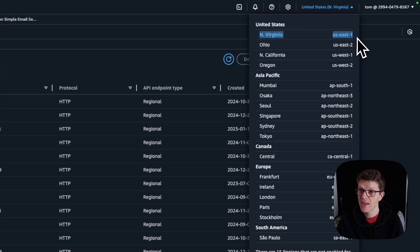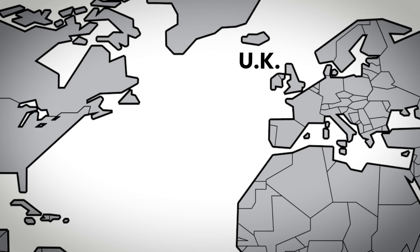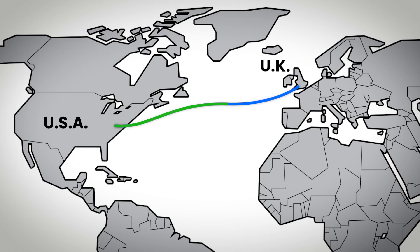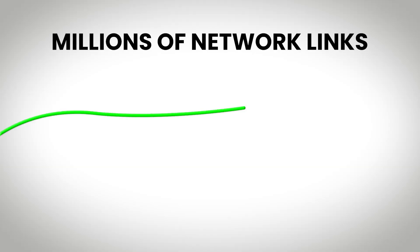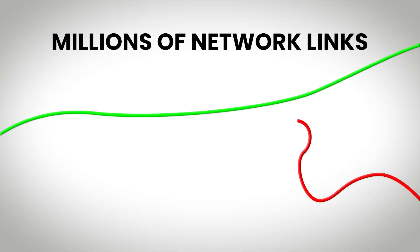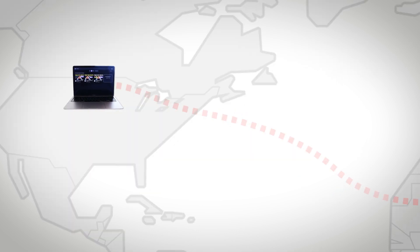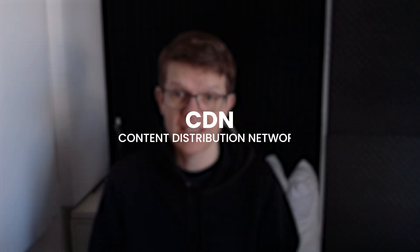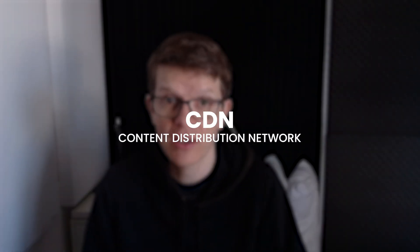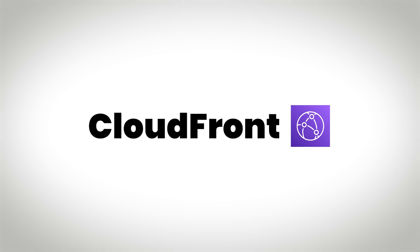My API is hosted in the US, so if someone from the UK sends a request, it has to travel across the Atlantic and back, which adds latency. To fix that, our next AWS service helps your web app load fast no matter where your users are. The problem with accessing a web app across the internet is that your request can travel through any of millions of network links — some fast, some painfully slow. For the best experience, your app should be served from a server physically close to the user. That's exactly what a CDN, Content Distribution Network, is for. AWS offers a CDN called CloudFront.